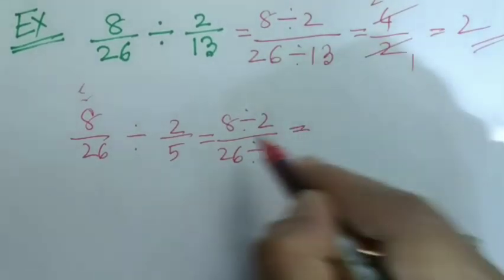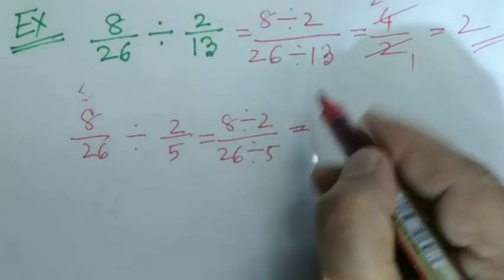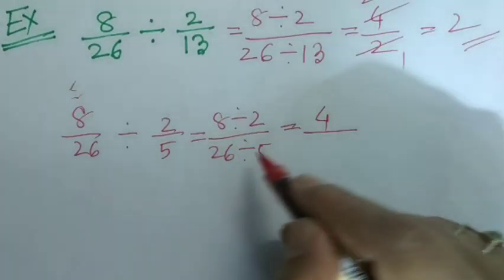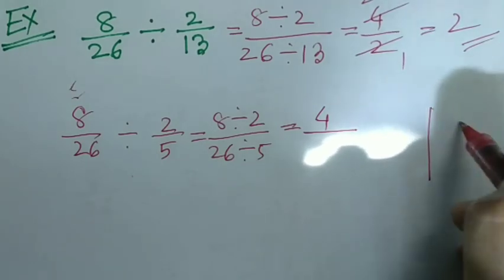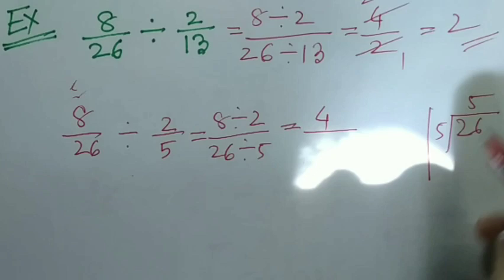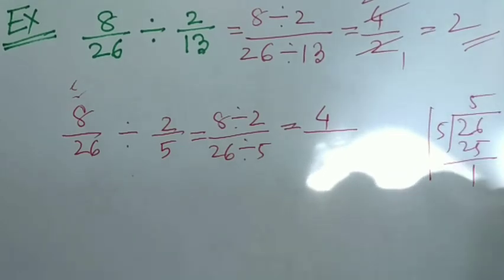In case of numerators, it works like before, 2 4s are 8. Now, I am dividing this denominator. 26 divided by 5, 5 5s are 25, this is 1.